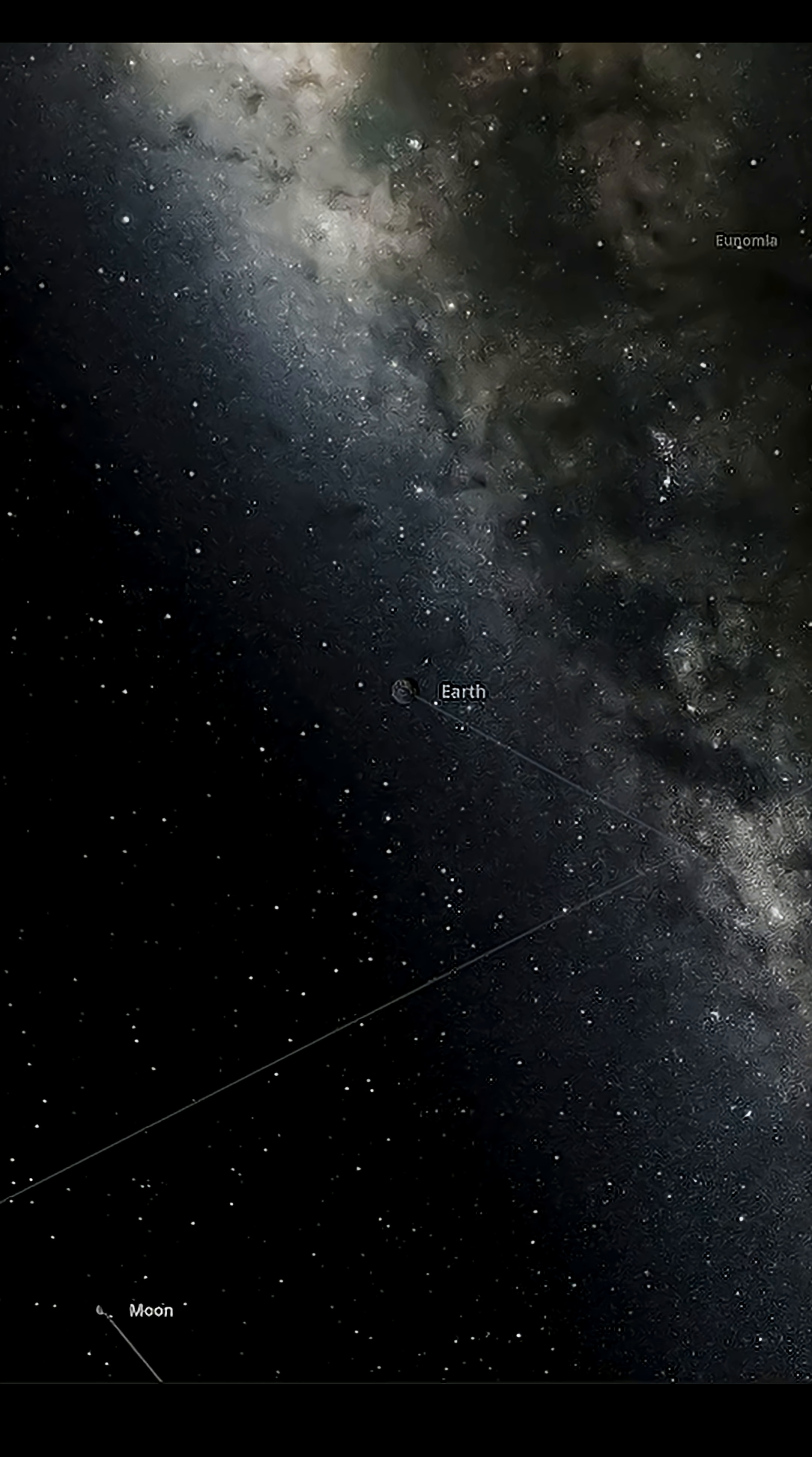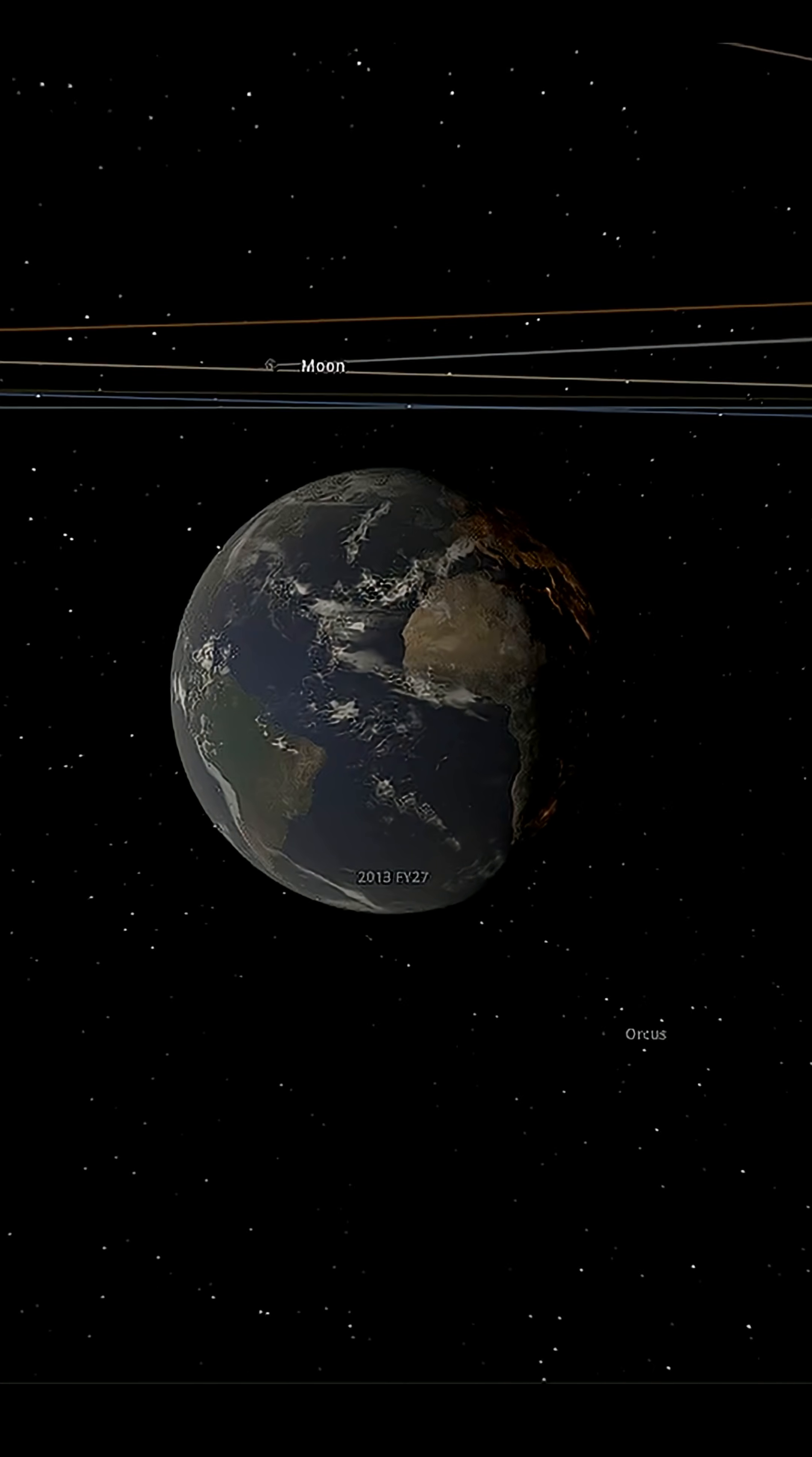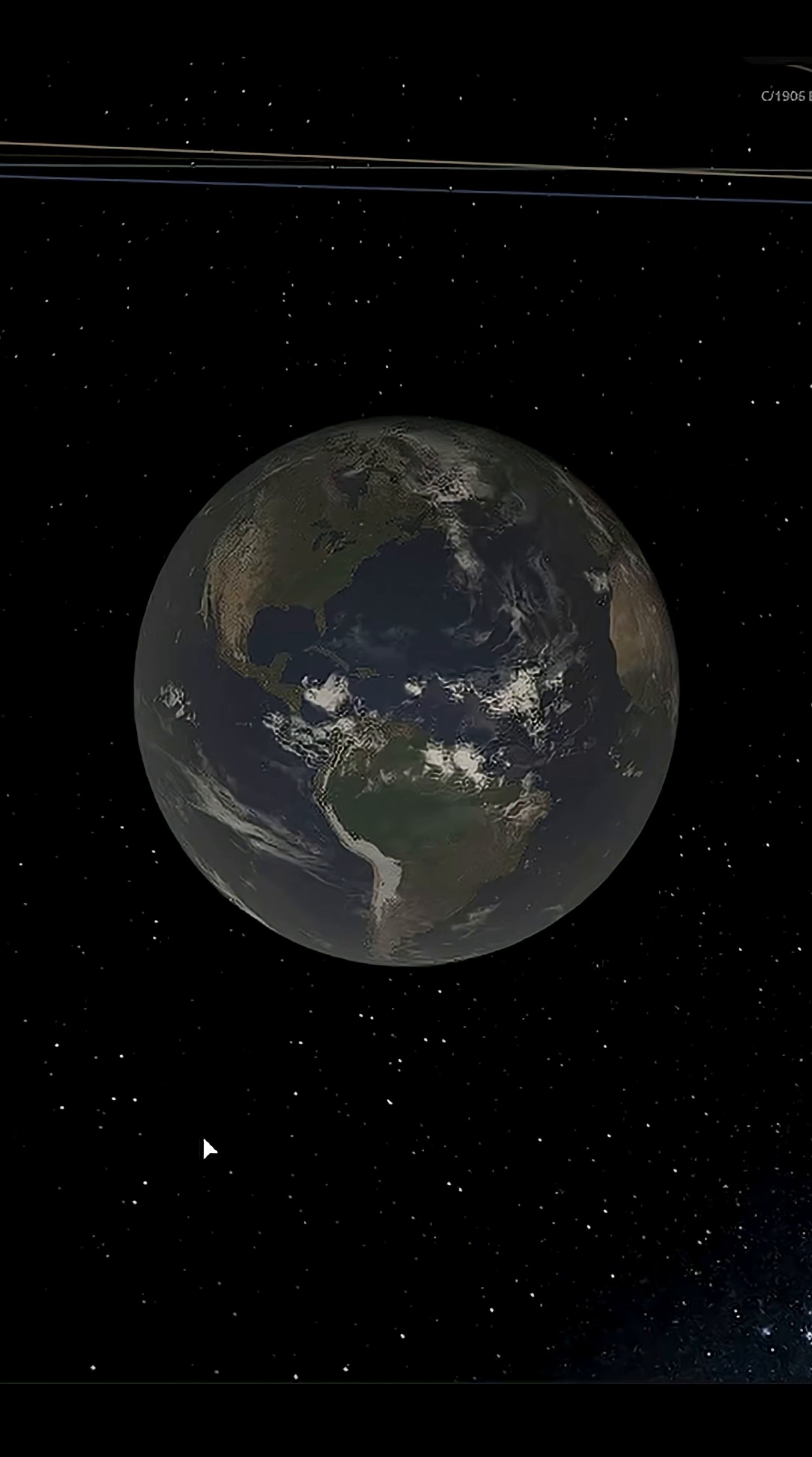What if Earth suddenly became tidally locked to the sun? Part 1. Let's freeze the planet in place, making the planet tidally locked to our sun.